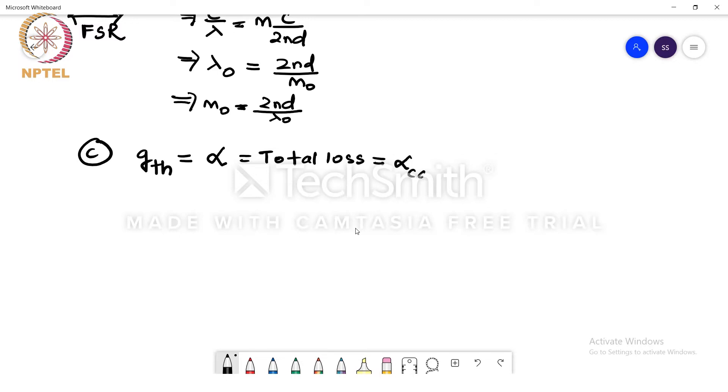One is the alpha cavity, the internal cavity loss, and then the mirror loss, the loss that is contributed by the end mirrors. Now alpha cavity is given to us, we know that alpha cavity is 0.05 meter inverse. What we are not given is the alpha mirror.